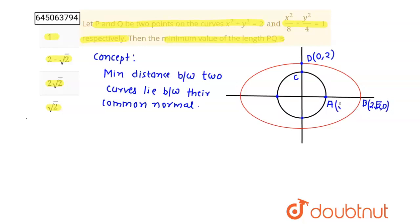Now A is root 2 comma 0 and C is 0 comma root 2. If you'll see this distance is minimum CD distance.